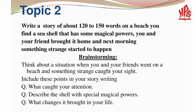Topic Number 2: Write a story of about 120 to 150 words on a beach where you find a seashell that has some magical powers. You and your friends brought it home, and the next morning something strange started to happen. Think about a situation when you and your friends went to a beach and something strange caught your sight. Include these points in your story: what got your attention, describe the shell with its special magical powers, and what changes it brought in your life. Imagine the whole scenario and start writing. Write it in 3 paragraphs of 120 to 150 words, using the correct tense and good vocabulary.